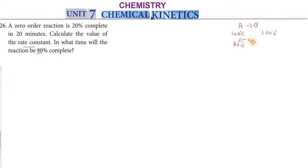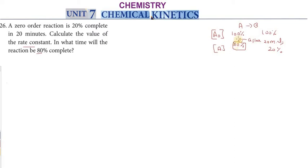After 20 minutes, 20% is complete, so the remaining reactant is 80%. Initial A0 is 100%. After 20 minutes, the reactant has reduced by 20%, leaving 80%. So for this zero order reaction: 20% complete in 20 minutes.